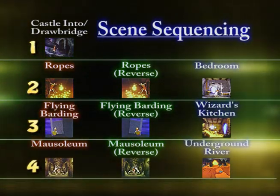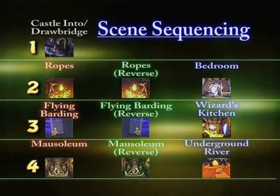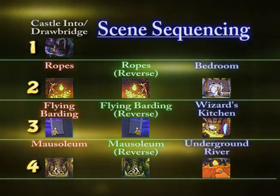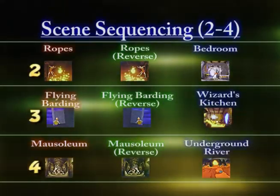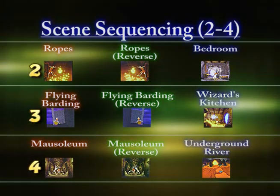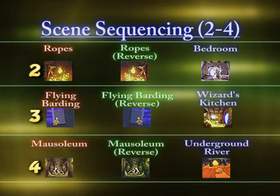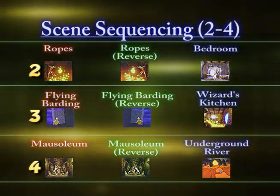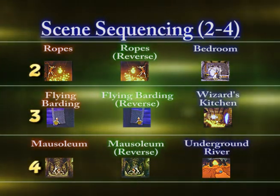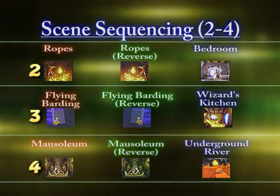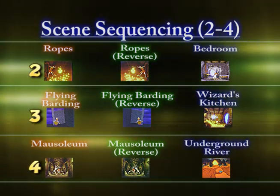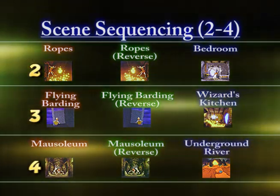That's why row one is up by itself — because it may or may not be shown. Then you have rows two, three, and four, and actually we have fourteen different rows. For scene sequencing, the computer will pick one of three scenes from row two — ropes, ropes reverse, or bedroom — to play. If the first scene is the drawbridge, this will be the second scene. If not, this will be the first scene. So it randomly picks one of these three to play.